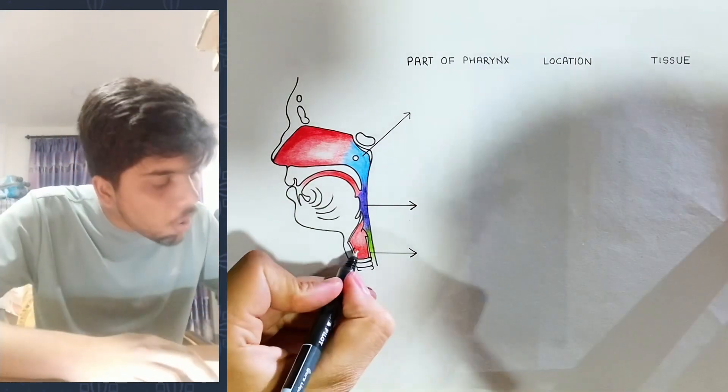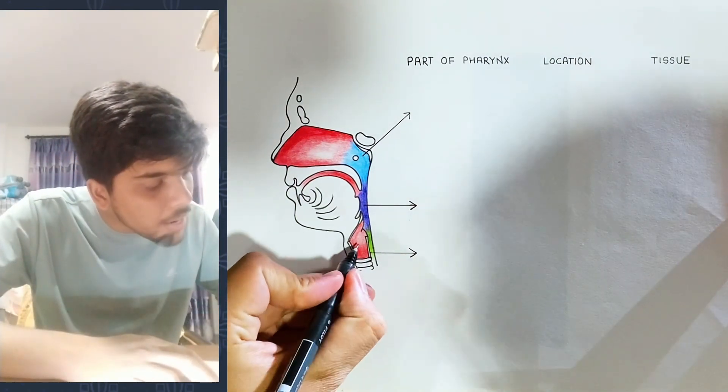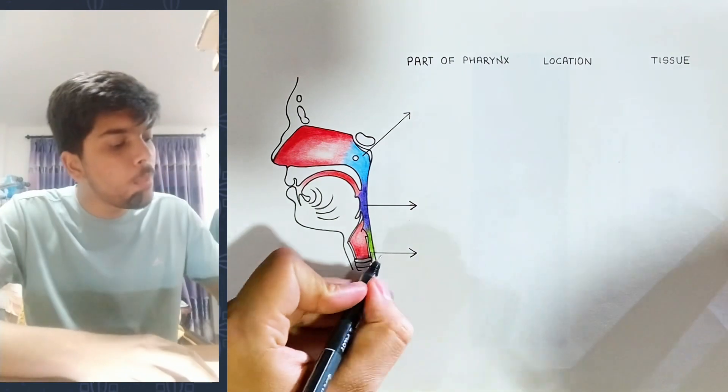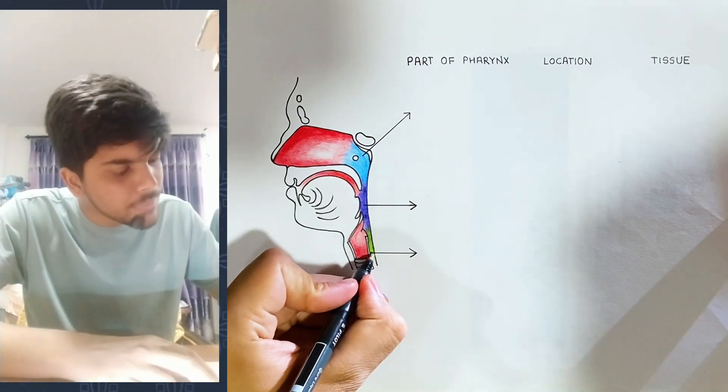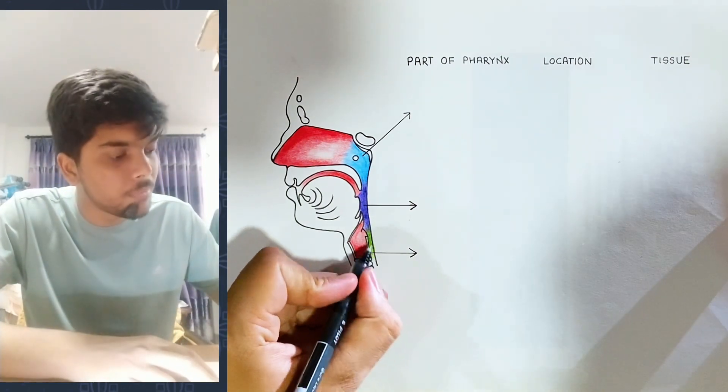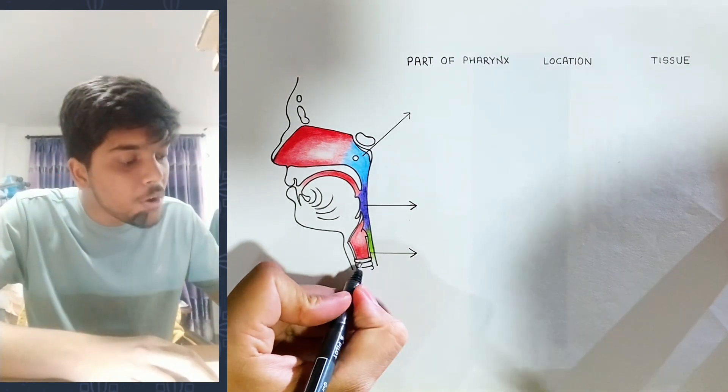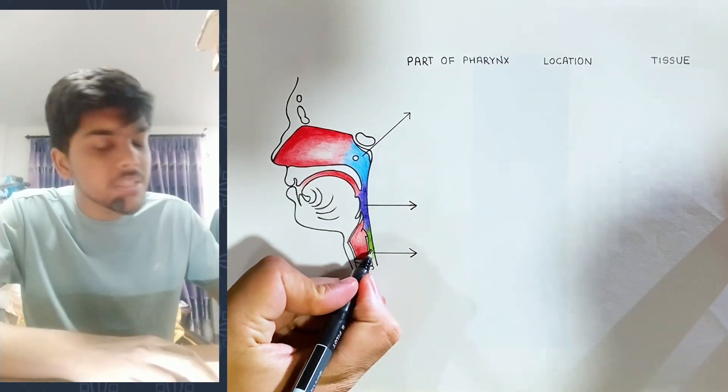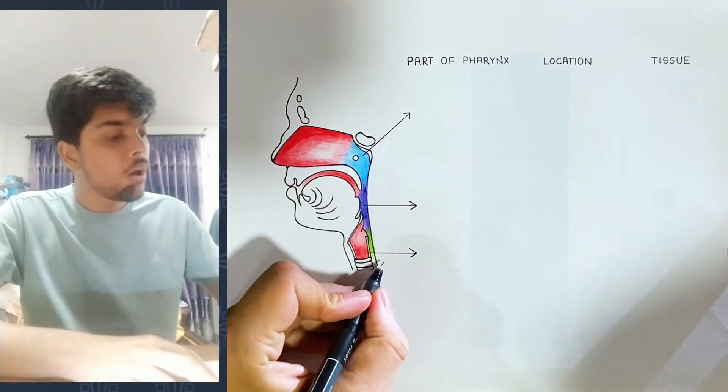One is the food pipe — the esophagus or alimentary pipe — and the other is the air pipe. The food pipe carries food, and the air pipe carries air.